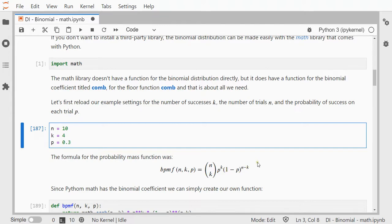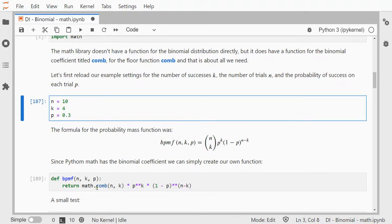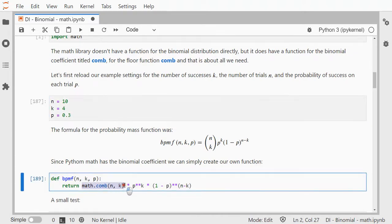Raised to the power of n minus k. So this is that binomial coefficient over here times the probability to the power of k, that's this part, times 1 minus p to the power of n minus k which is over here. In Python the power operator is 2 asterisks.